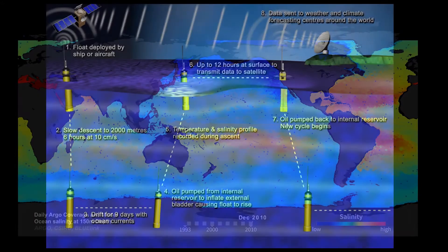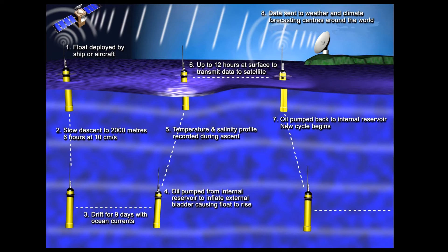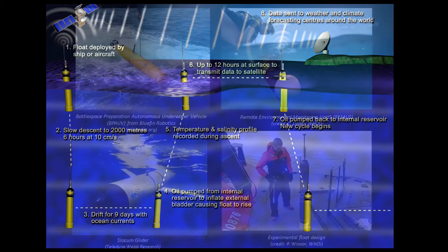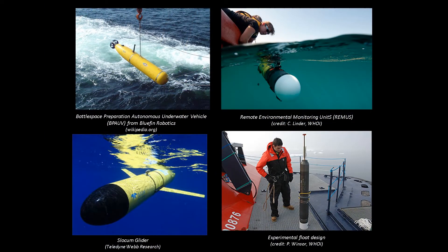But they can't decide where to go. In the future we'll have a more autonomous and capable sampling network in the ocean, which can help us to better predict the state of the ocean.